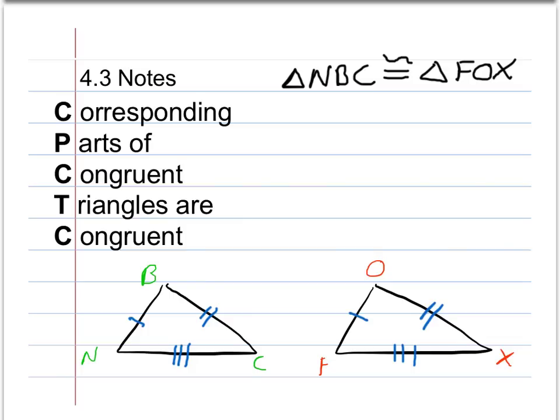Also, the angles are all congruent. So for example, angle N has to be congruent to angle F. Angle B has to be congruent to angle O. And angle X and angle C are also congruent.